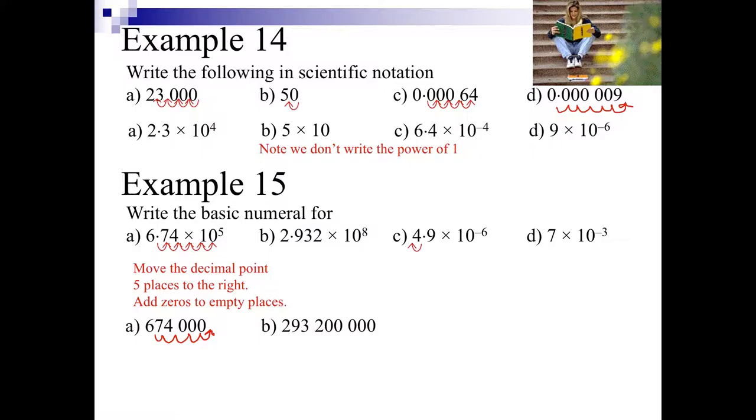So here on part C, it's negative 6, so we know the number is going to be a decimal and it's going to be less than 1. So if we move the decimal place 6 spaces to the left because it's a negative, we go to the left, and we add zeros to the empty spaces, we get 0.000049.